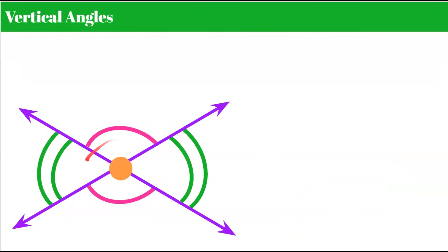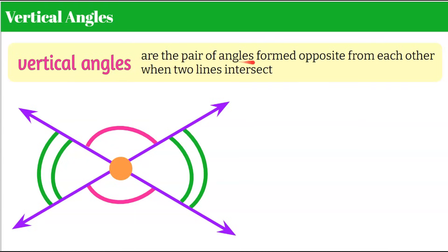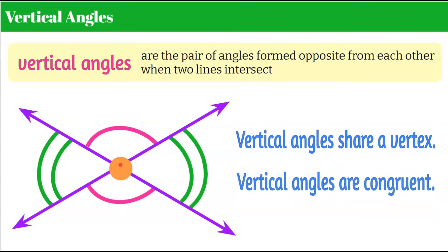Now let's talk about the angles formed when two lines intersect. These are called vertical angles — the pair of angles formed opposite each other when two lines intersect. Vertical angles share a vertex and are congruent. We have two pairs: one pair marked with one arc and another pair marked with two arcs. Each pair is opposite and congruent, though the two pairs may have different measures.